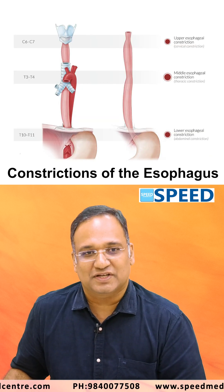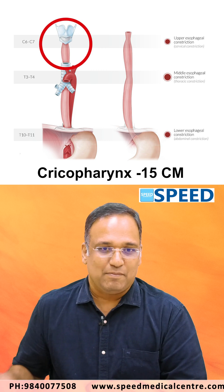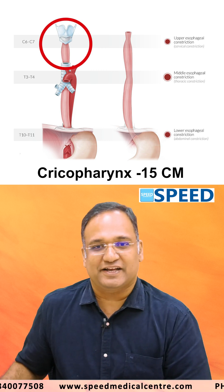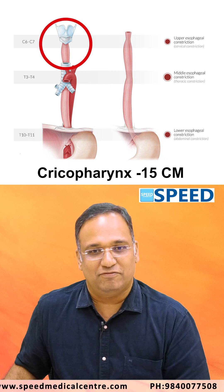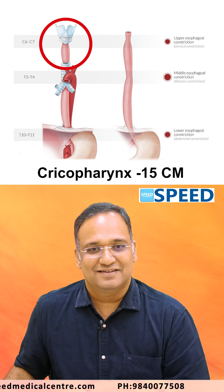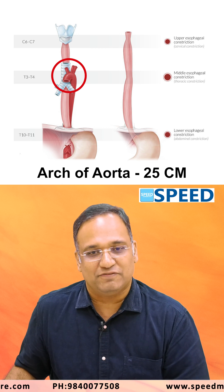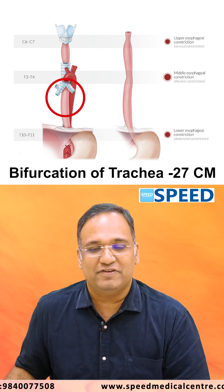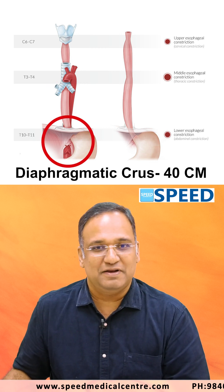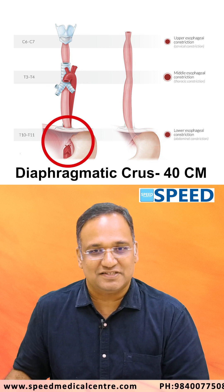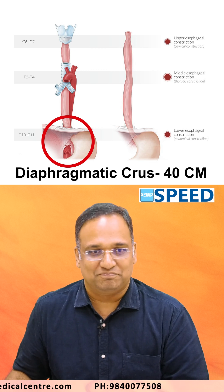They can ask you about the constrictions in the esophagus. Number 1 constriction is the cricopharynx at 15 cm from the incisors. 25 cm will be the arch of the aorta, 27 cm will be the bifurcation of the trachea, and 40 cm is the diaphragmatic crossing at the level of the OG junction.